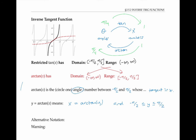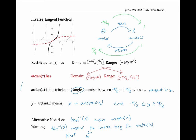Arc tan of x — the inverse tan function — can also be written as tan to the minus one of x. And once again, tan inverse of x means the inverse trig function, and not the reciprocal function.